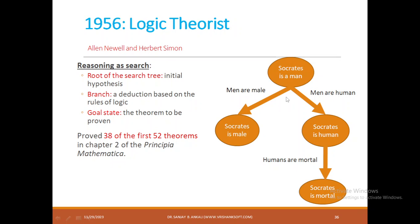It is a simple rule-based deduction that reaches a conclusion. The initial hypothesis is 'Socrates is a man.' The rule: men are male, men are human. Based on this, the hypothesis converts to 'Socrates is male,' then 'Socrates is a human.' Another rule: humans are mortal. So the hypothesis becomes 'Socrates is mortal.' This Logic Theorist is based on the syllogism concept of Aristotle.